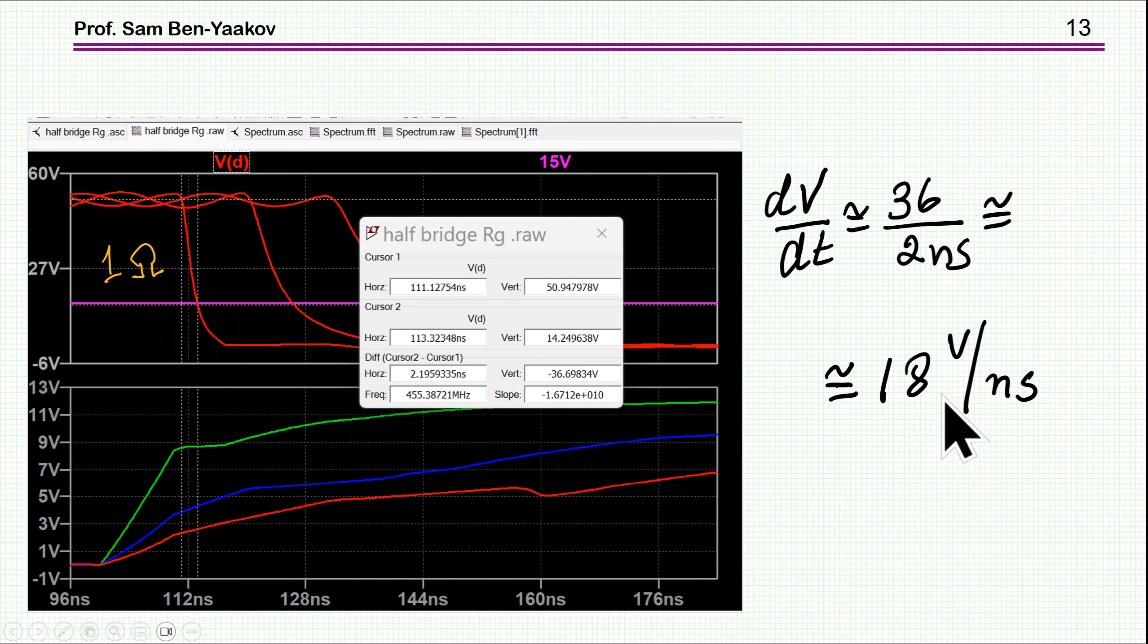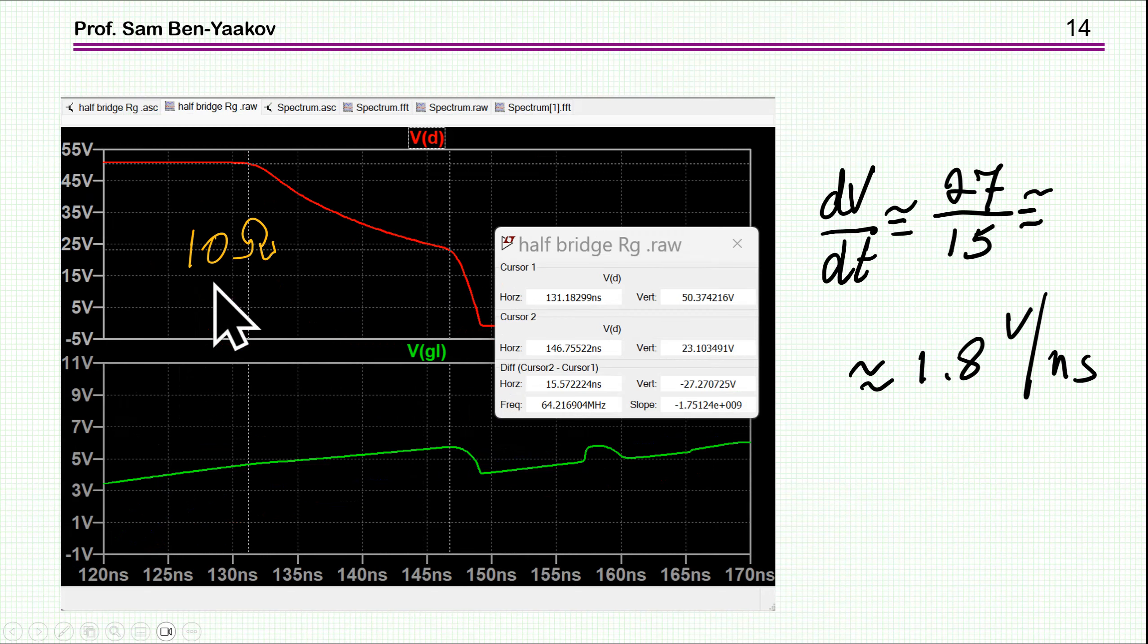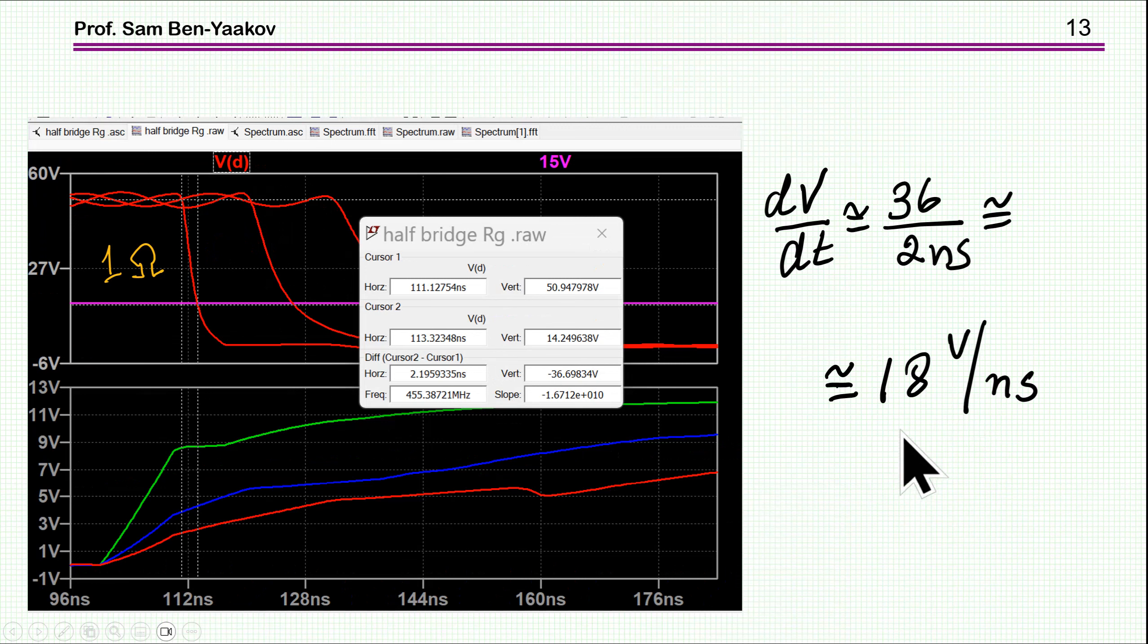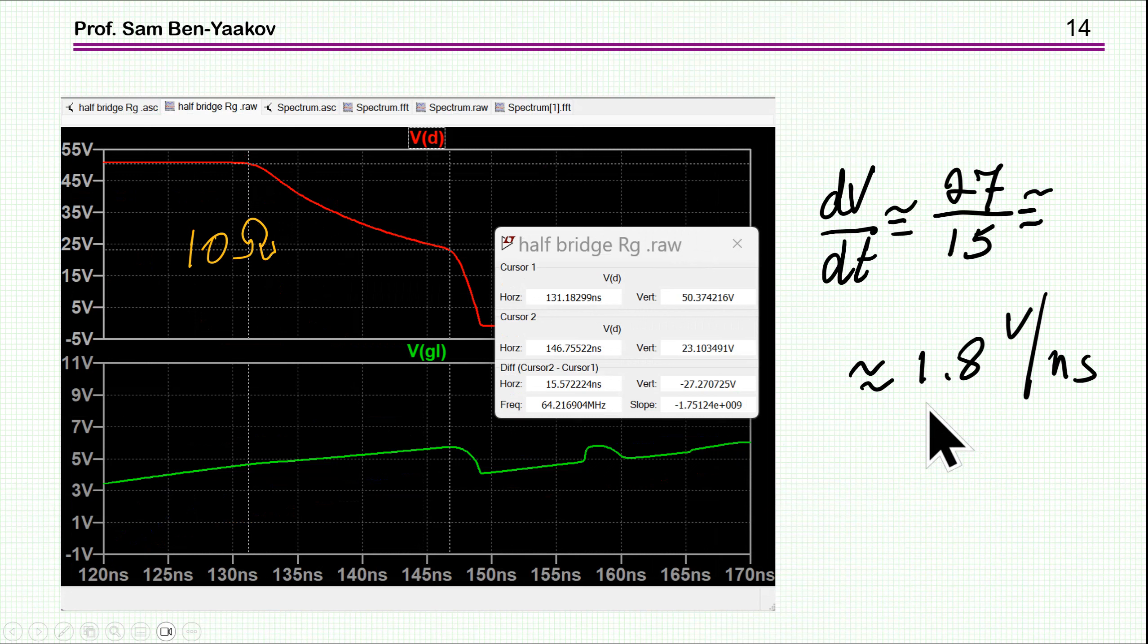And in this part here, we have a drop of 36 volt and 2 nanosecond. So it is 18 volt per nanosecond rate. If I have a 10 ohm, again, I'll just look at this straight line here. Let's forget about this. It's due to the fact that the gate itself is changing. Let's not go into it. It's not a major issue for this discussion. So we're looking at the fastest rate here and it is 1.8. And this is for 10 ohm, 1.8 volt per nanosecond. Earlier we got 18. So you see that even in this very simple simulation, we see a factor of 10 in dV/dt as we change the resistance.